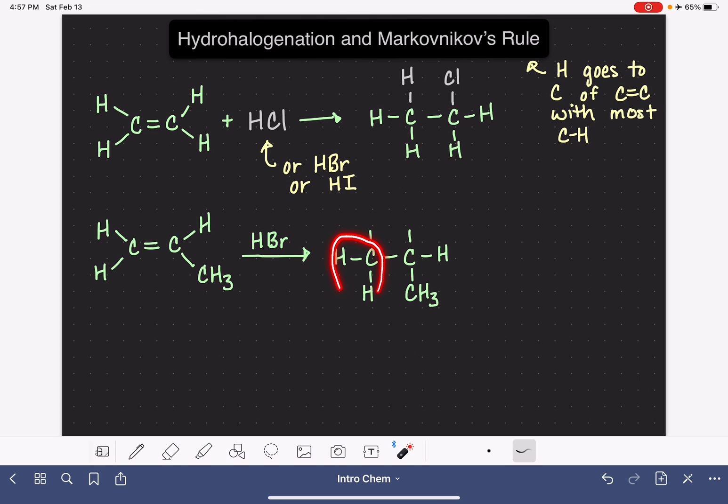So this is the carbon that has the most bonds to hydrogen, and that's where our new hydrogen atom will go. I'm actually going to make this a different color. So the new hydrogen will go onto that carbon, and the bromine will go onto the other carbon. And again, this is what we call Markovnikov's rule.